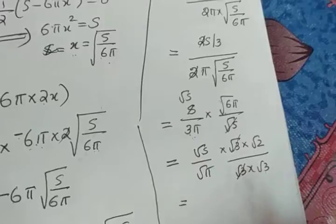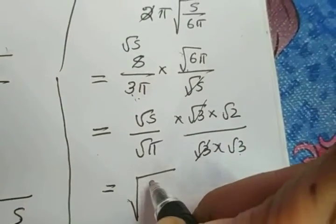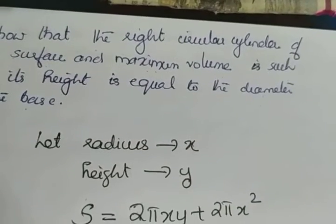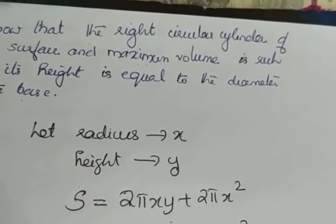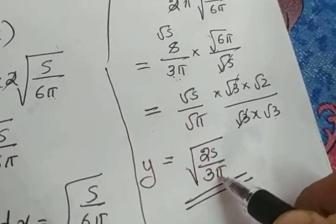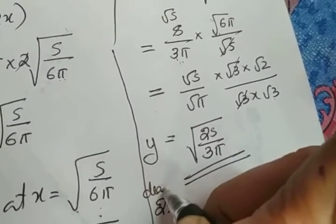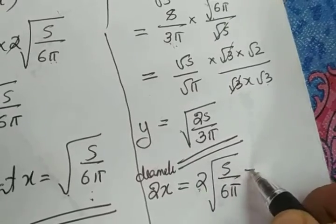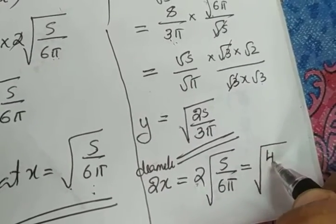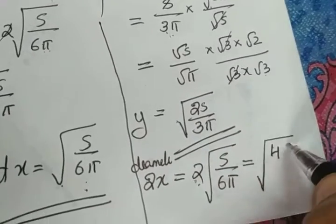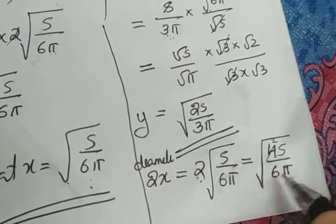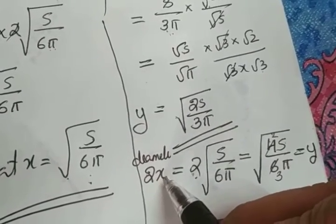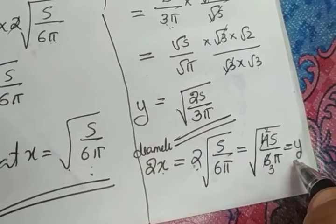This simplifies to y = √(2s/3π). Now the diameter is 2x = 2√(s/6π). Taking 2 inside the square root gives √(4s/6π) = √(2s/3π), which equals y. So diameter 2x equals height y, proving that for maximum volume, height equals the diameter of the base.